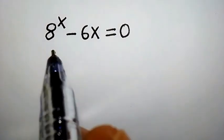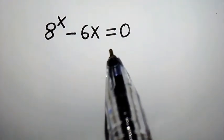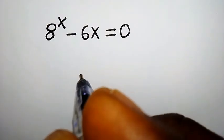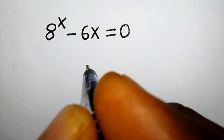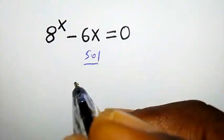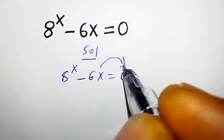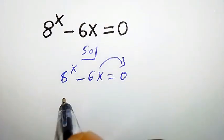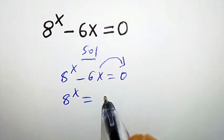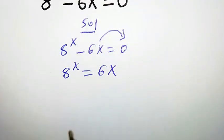Welcome back. We are solving 8 to the power of x minus 6x equals zero for x. The first step is to transfer the 6x term to the right side, giving us 8 to the power of x equals 6x.